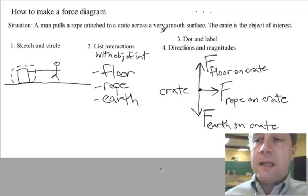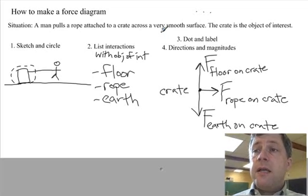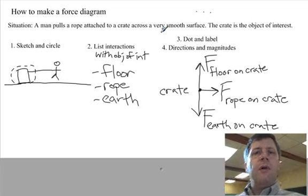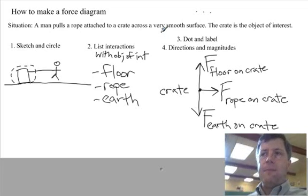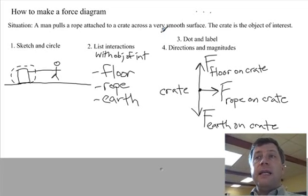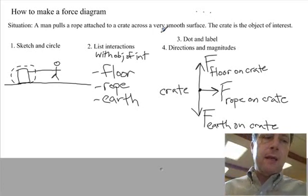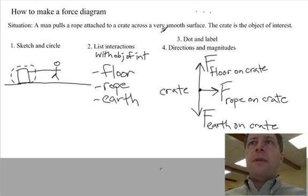Note that we are writing the force of the earth on the crate because each of these arrows represents an interaction. And an interaction is always between two physical objects that you can see and touch. So force of earth on the crate is our preferred way of saying this rather than force of gravity on the crate or something else.